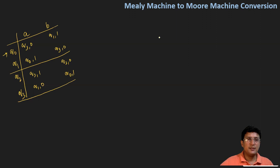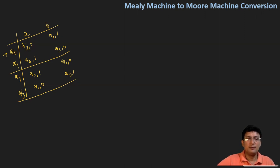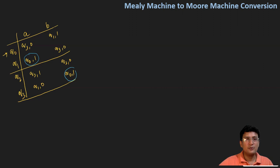For conversion to the Moore machine, let us analyze what outputs are associated with the different transitions. Starting from q0, you can see that with q0, one is associated as the output in both cases. So when converting to the Moore machine, q0 will be only one state because there is only one output associated with it.